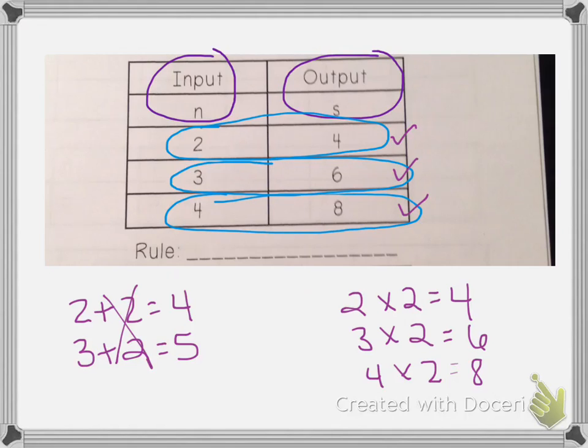The way that I'm going to write that rule is I'm going to say the output equals N times two. So what that means is I take the number here in the N and I do times two, it will equal the output.